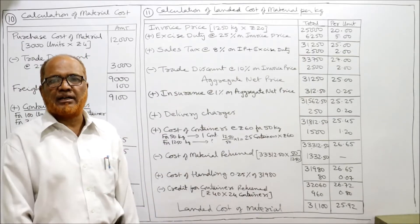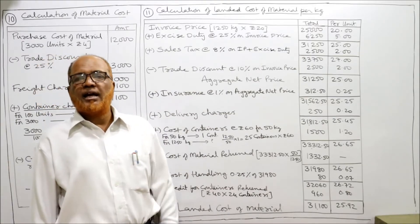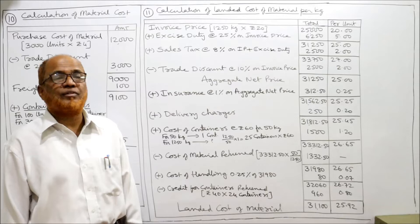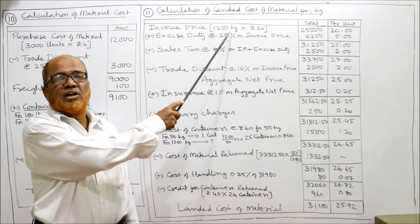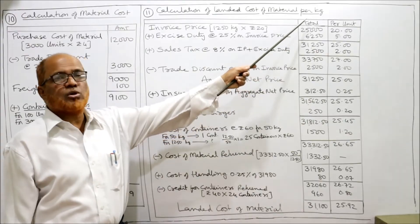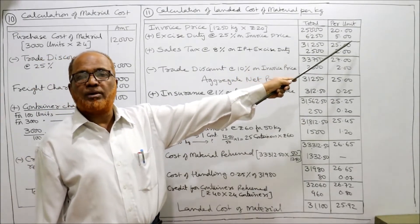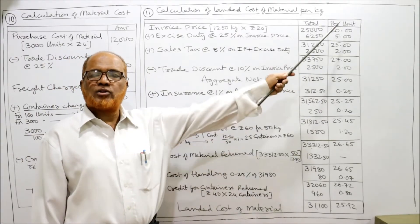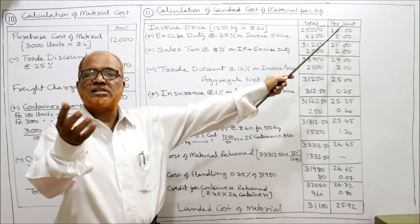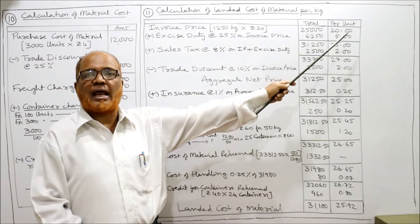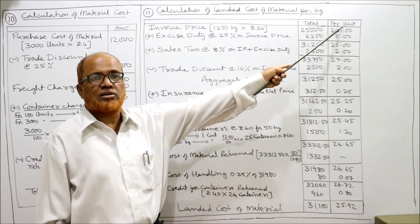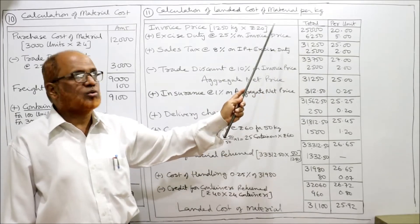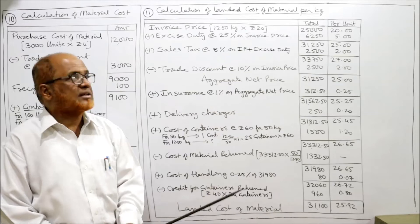Calculation of landed cost per kilogram: Invoice price is 20 rupees per kg. We are purchasing 1250 kg, so 1250 × 20 = 25,000 rupees total. I have also opened a per-unit (per-kilogram) column since we ultimately need to find the landed cost per kilogram. So 25,000 ÷ 1250 = 20 rupees per kilogram as the invoice price.